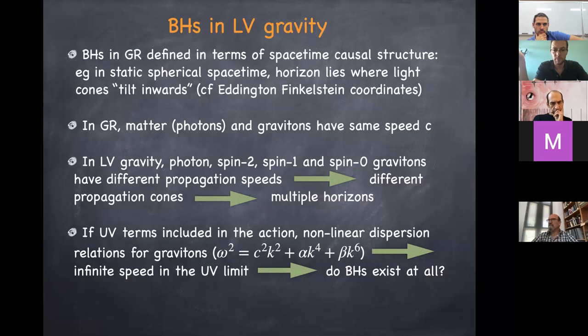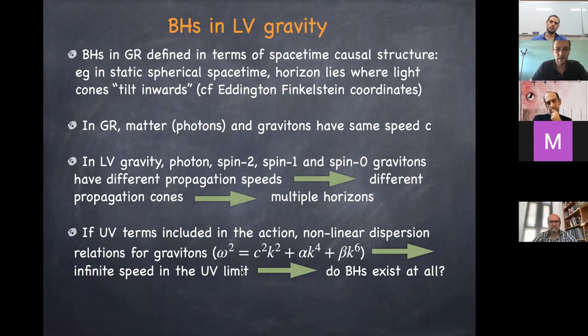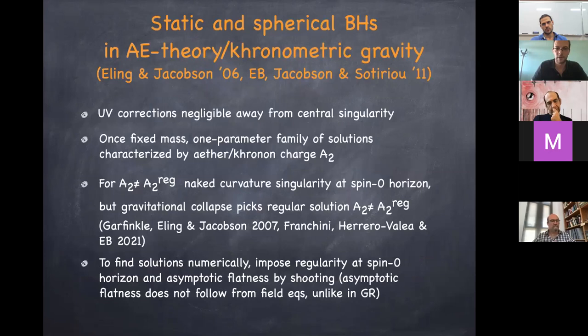Moreover, if you want Lorentz violations in gravity to provide a UV-complete, possibly renormalizable theory, you need a non-linear dispersion relation that produces infinite group speeds in the UV limit. This raises the question of whether black holes exist at all in such theories, since with infinite propagation speed you could escape from any existing horizon.